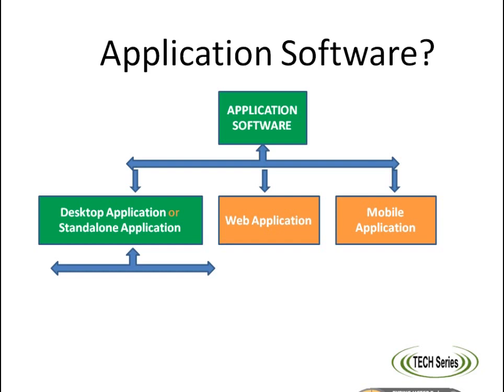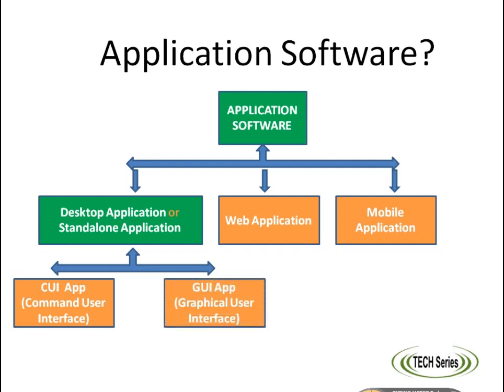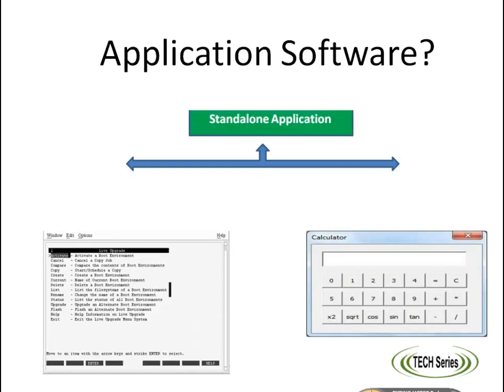Desktop application is further categorized into two sections: CUI — Command User Interface application, and GUI — Graphical User Interface application. These applications run within an underlying operating system environment. In layman's terms, those applications which run on a double-click on a computer are called desktop or standalone applications.